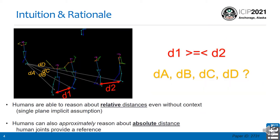The intuition is that even without context — that is, only with skeletal joints — even humans are able to reason about the relative distances between people by implicitly assuming that all the feet of the people lie on the same plane. Actually, humans can also approximately reason about absolute distances by leveraging the metric reference provided by the human size, the size of the joints.